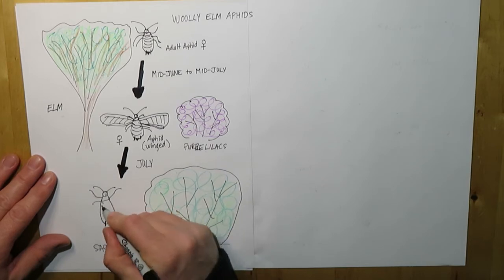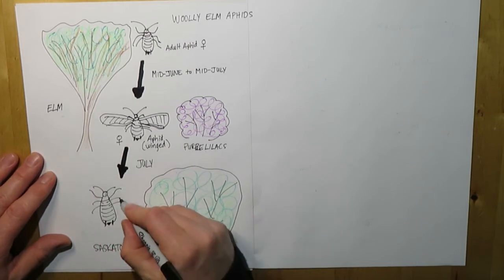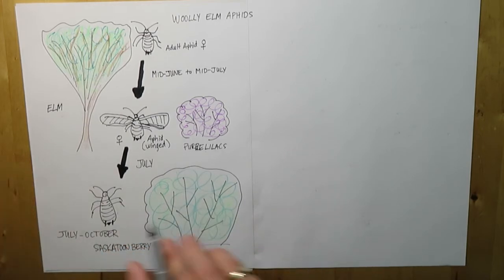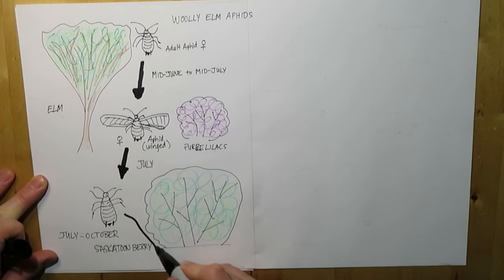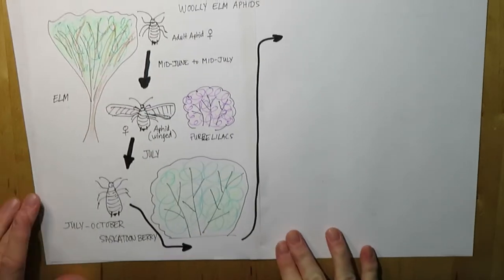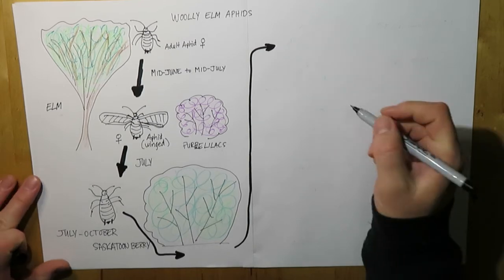So when they arrive on the saskatoon, they go back to a non-winged form, wingless form, and they'll stay there from July until October. And so at this point, we're going to focus in on the saskatoon and on the roots to see what they do there.